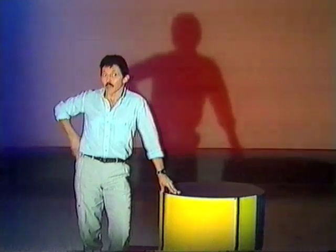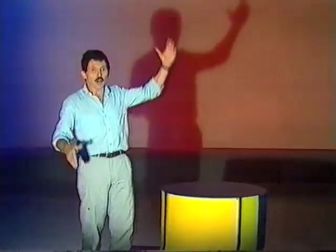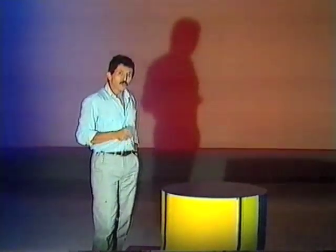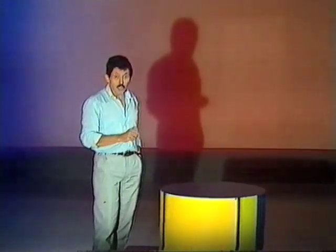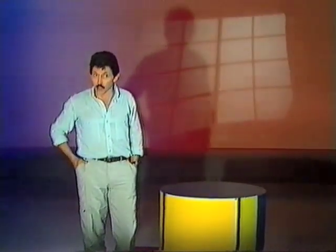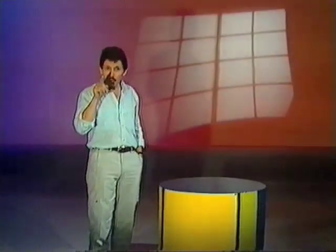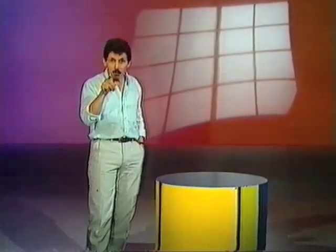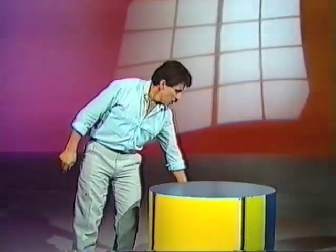Shadows can be bigger than the real object — longer, wider, higher. Not always though; sometimes they're very close to the size of the real object, and they're usually roughly the same shape as the real object. For that reason you should be able to tell what objects I'm bringing up to the light in a moment by looking at the shadows.